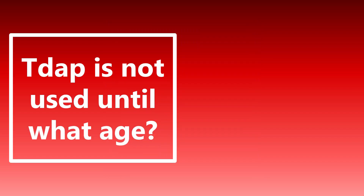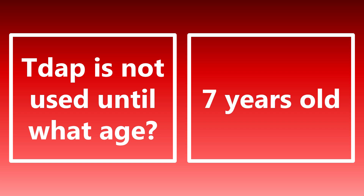Tdap is not used until what age? Tdap is not used until age seven. The CDC typically recommends patients get this around 11 to 12 years old, but younger than seven, patients get the DTaP. If they're older than seven, they are eligible for the Tdap. Really important to know that vaccination distinction.